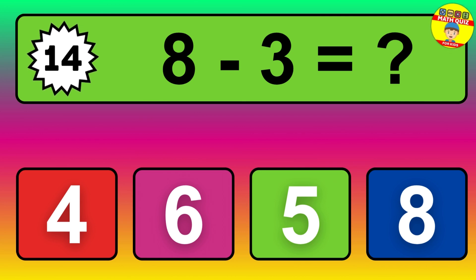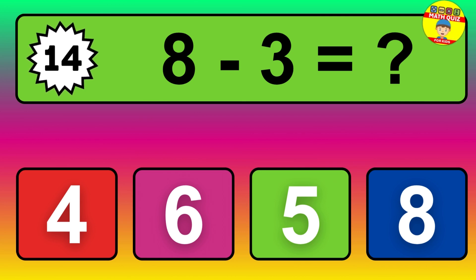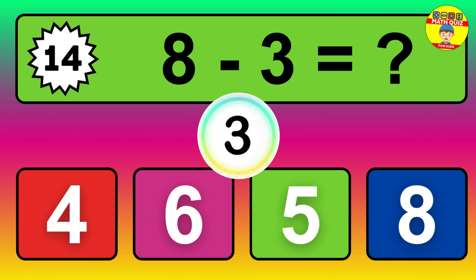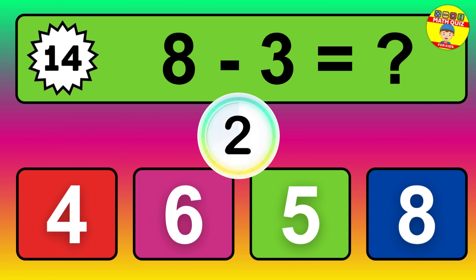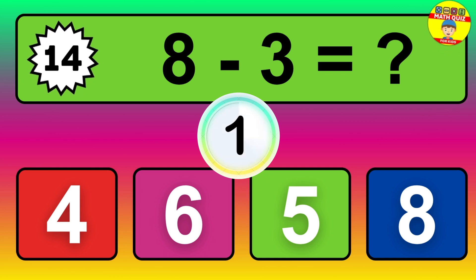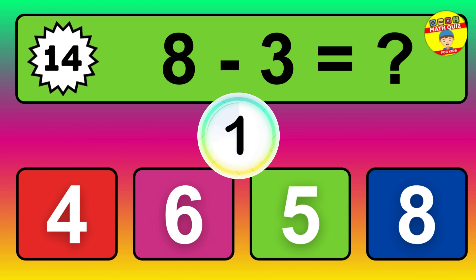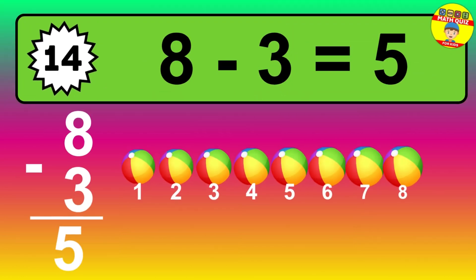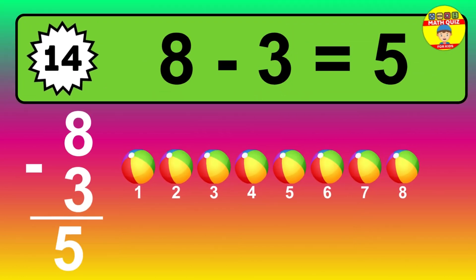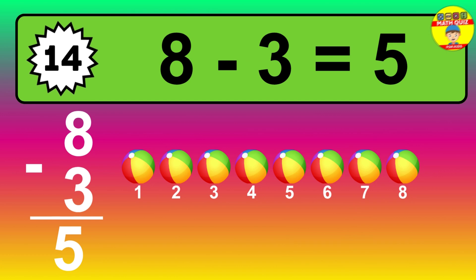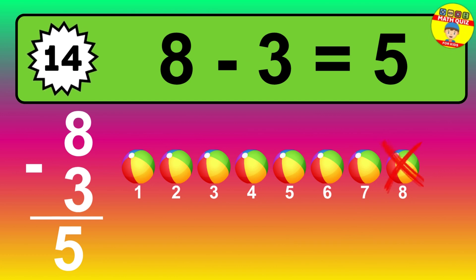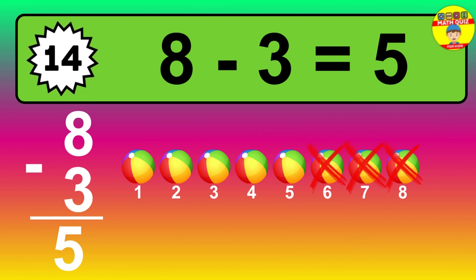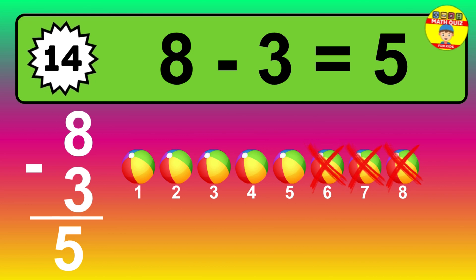Question fourteen: eight minus three equals what? So the answer is eight minus three is five. Let's count it. One, two, three, four, five.